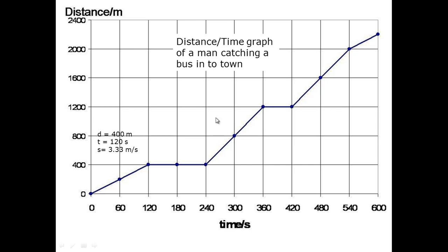At this point here, the second point, from 120 to 240, the distance hasn't changed. In this case, this flat line here means that it is stationary. Therefore, the distance is 0 meters. The time is 120. Therefore, the speed is 0 meters per second.